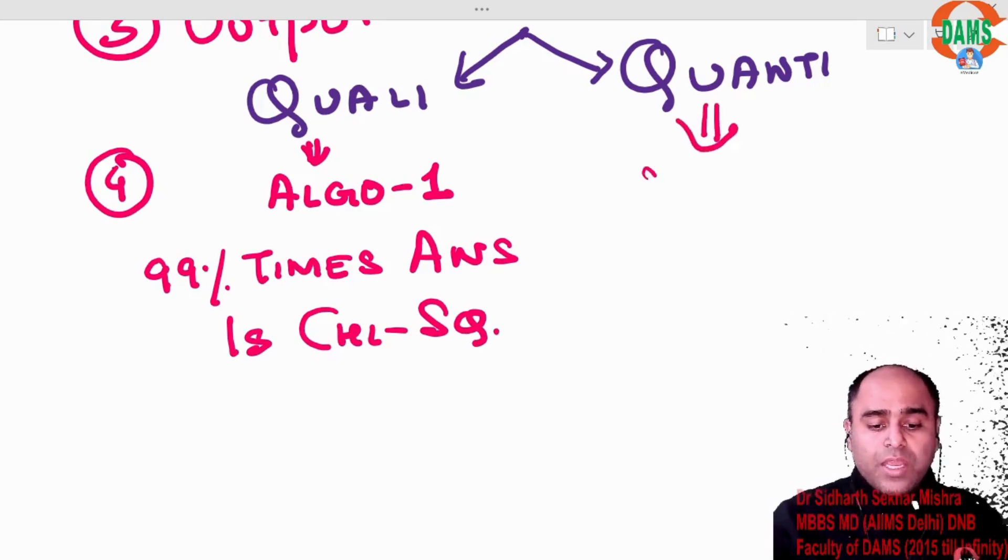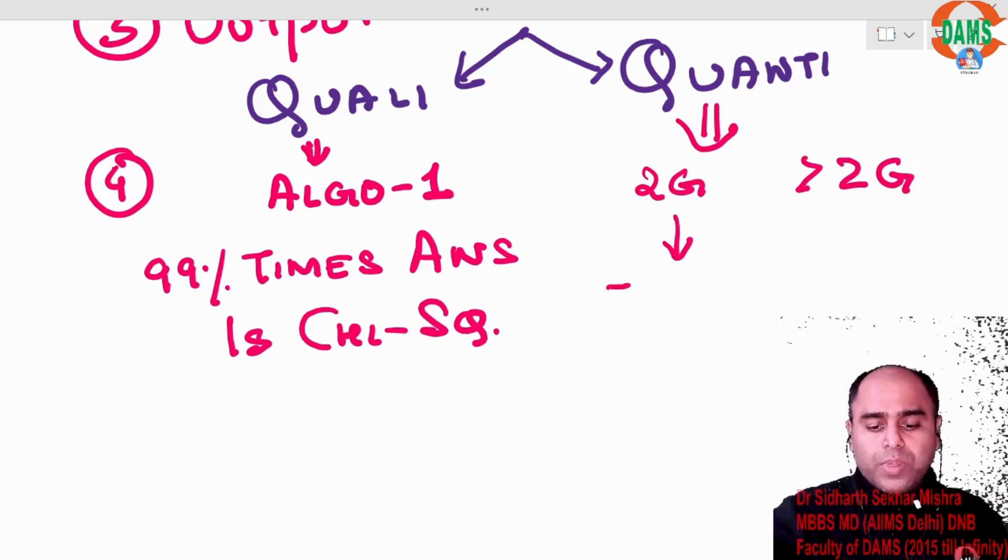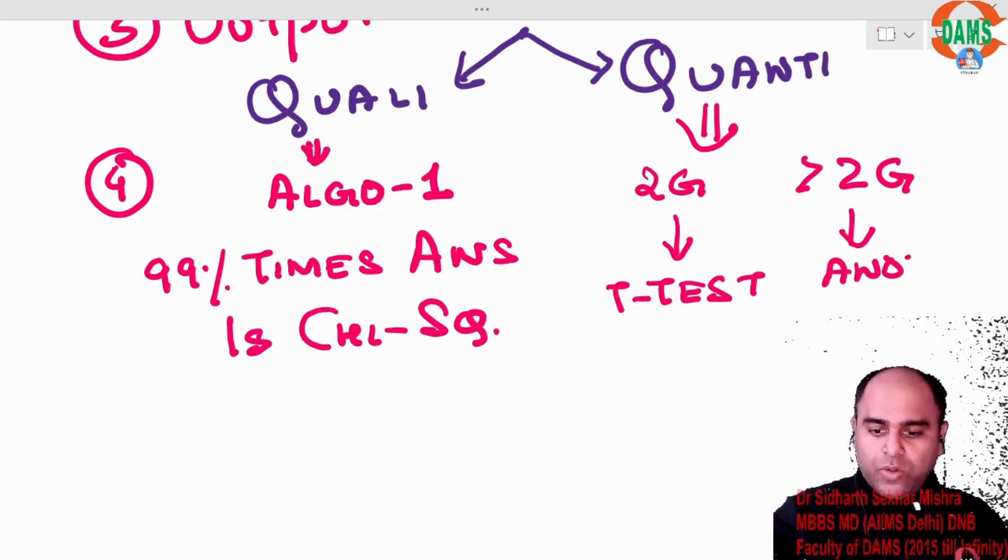When I talk about quanti, if it is 2 groups or more than 2 groups, 2 groups it is t-test, more than 2 groups it is ANOVA.